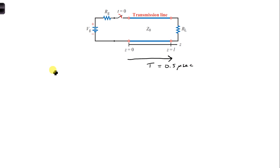So we want to plot at T over 2 seconds. So at that point, the very first V1 plus wave will have only reached halfway down the transmission line. So we know how far it has propagated, halfway down the transmission line.